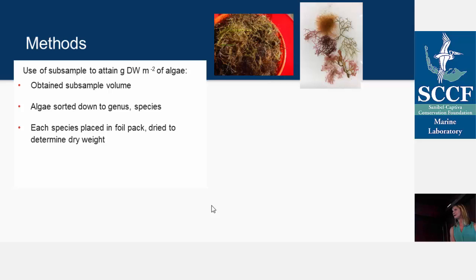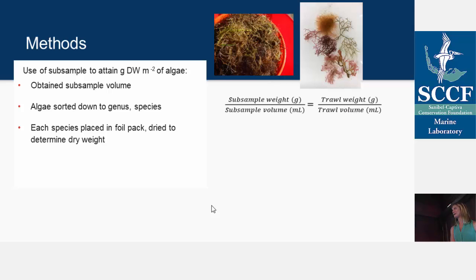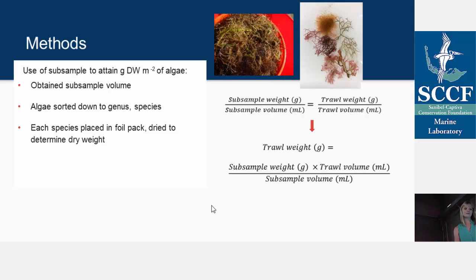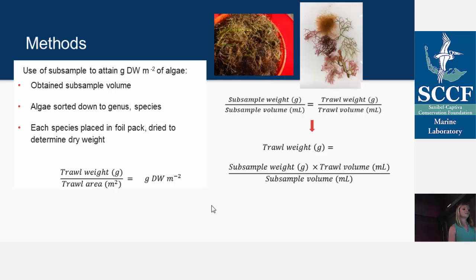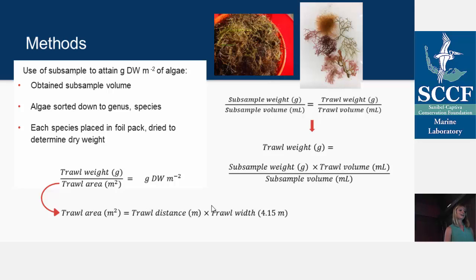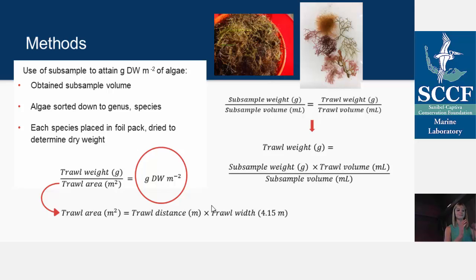Going into the math a little bit — it's actually pretty simple. We operate on the basic assumption that subsample weight over subsample volume equals trawl weight over trawl volume. Using that proportion, you can get the trawl weight by multiplying the subsample weight by the trawl volume divided by the subsample volume. You then divide that weight by the trawl area — which is the trawl distance in meters times the trawl width, measured as 4.15 meters. Using all that, you get your grams dry weight per meter squared, which allows us to analyze and compare our results.